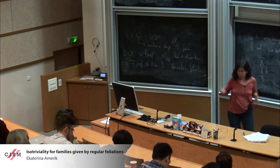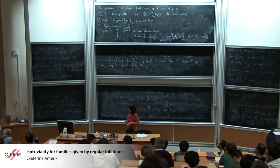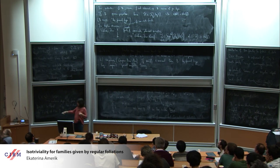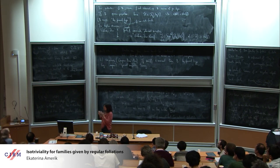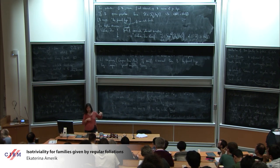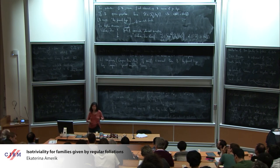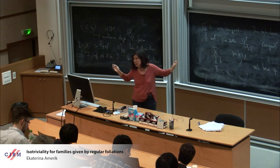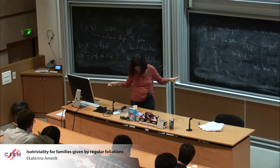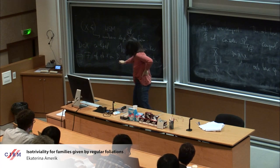We were interested in the question: when is this characteristic foliation algebraically integrable? If D is uniruled, it's easy to see. On the other hand, Hwang-Viehweg proved it cannot be algebraically integrable when D is of general type. We proved it basically can only be algebraically integrable if D is uniruled or if the whole picture comes from a product — on an irreducible holomorphic symplectic (hyperkähler) manifold, it cannot be algebraically integrable unless D is uniruled.